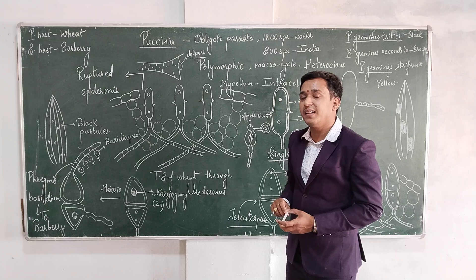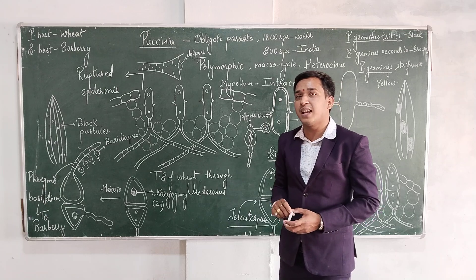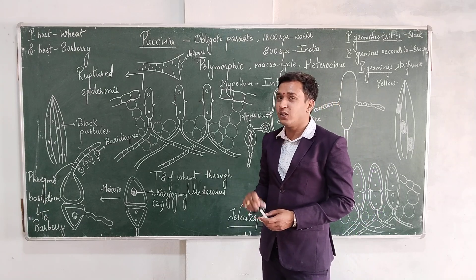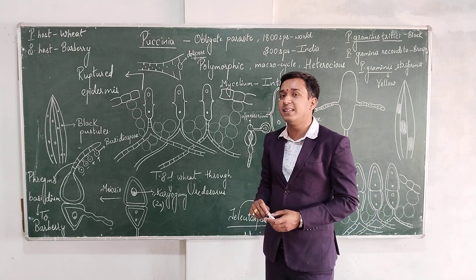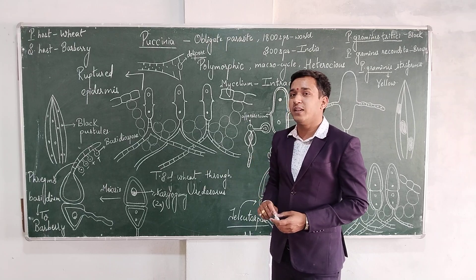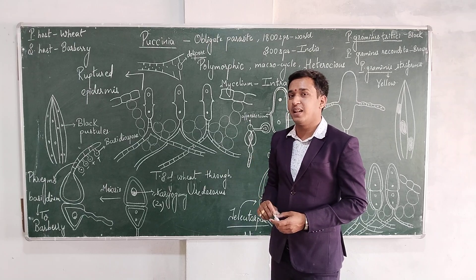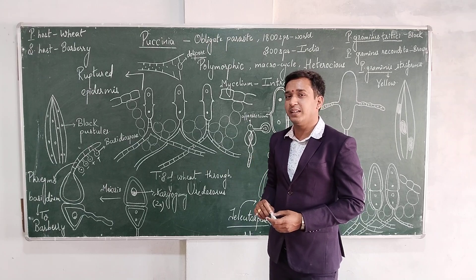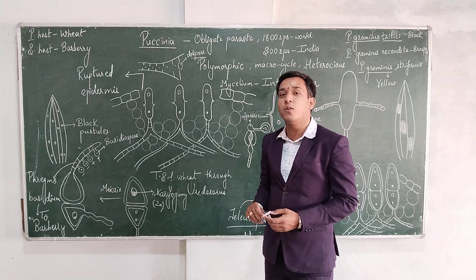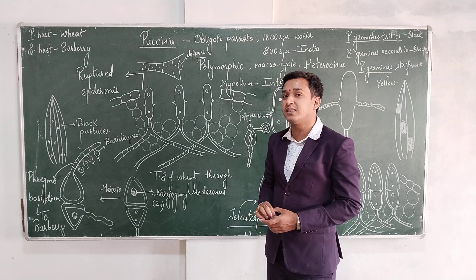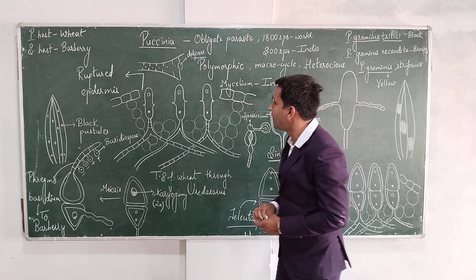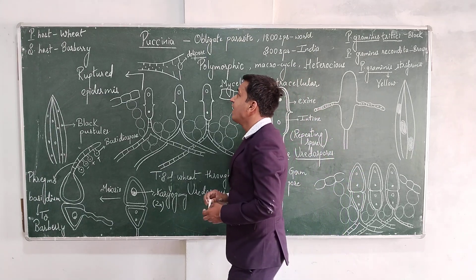Dolipore septa is a characteristic feature of class Basidiomycetes. So Puccinia belongs to class Basidiomycetes, and in its mycelia, dolipore is present. Remember this point that dolipore is the characteristic feature of class Basidiomycetes.